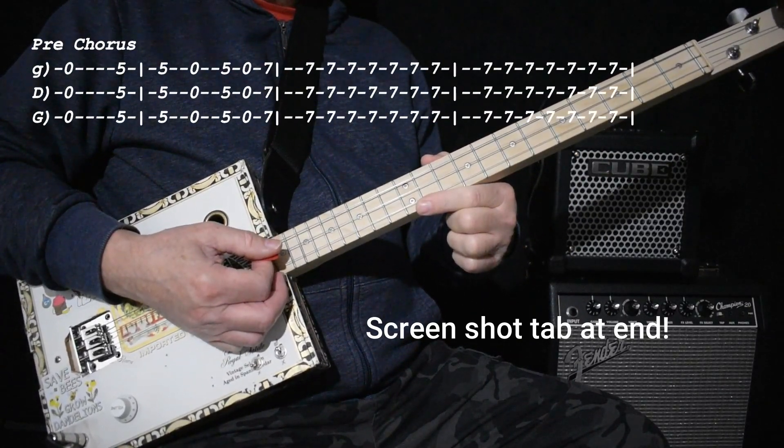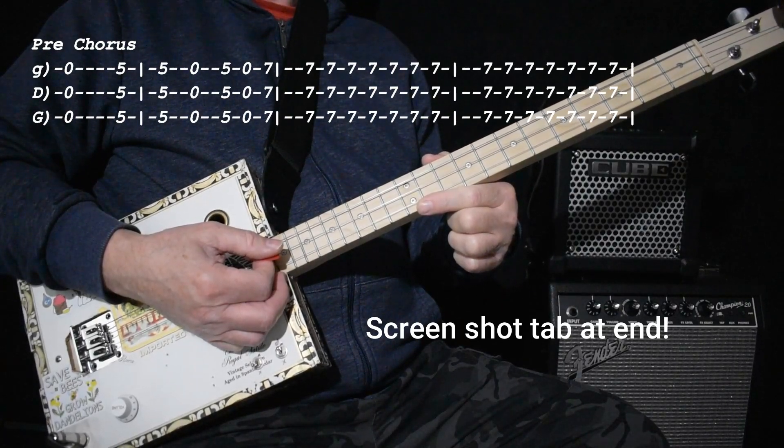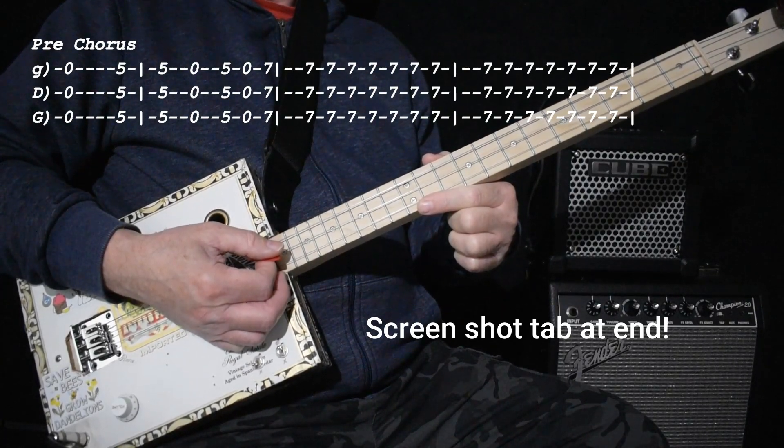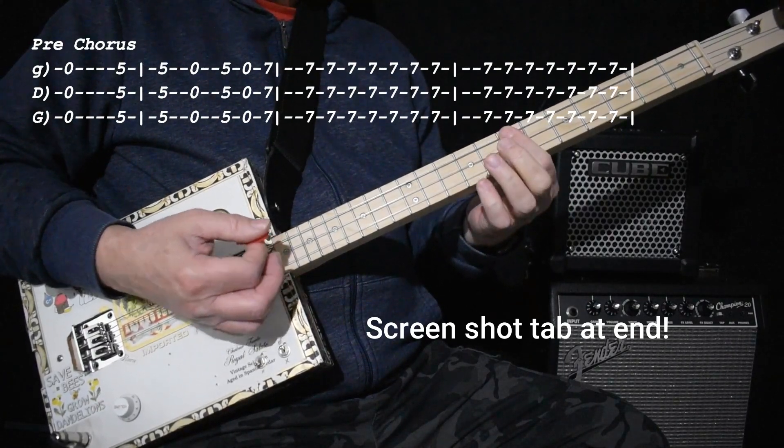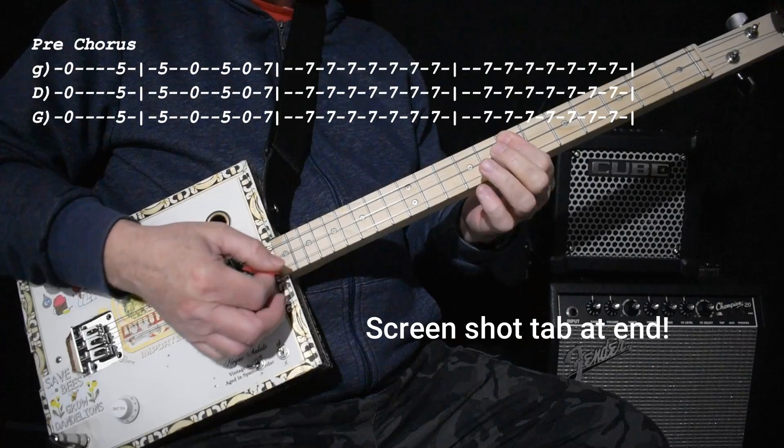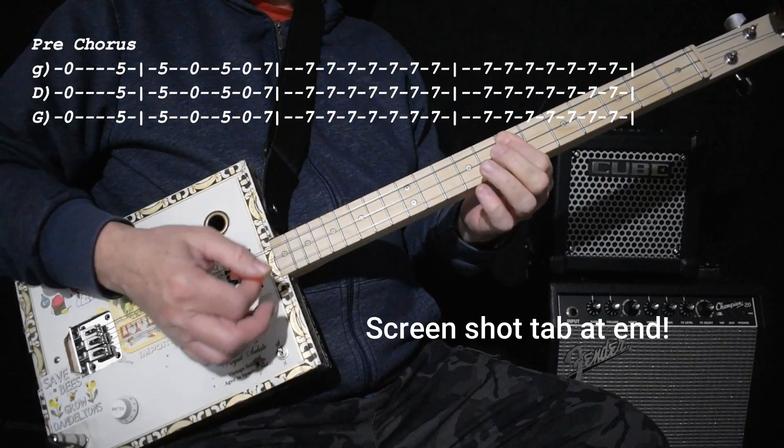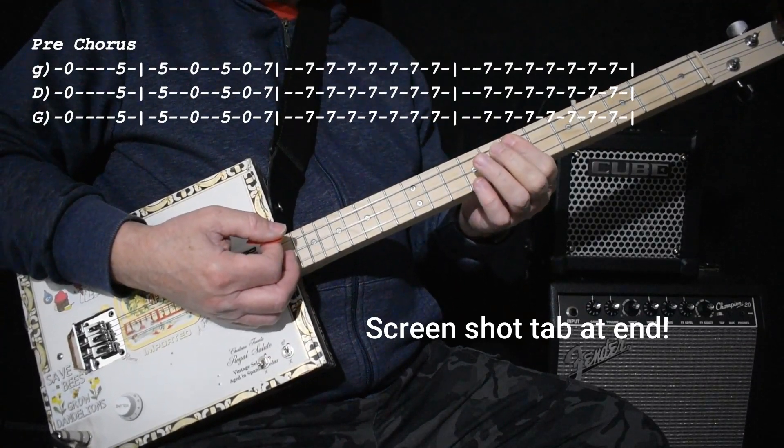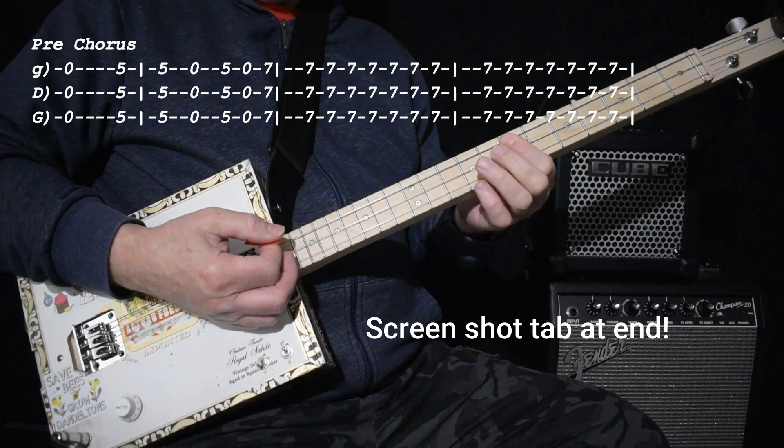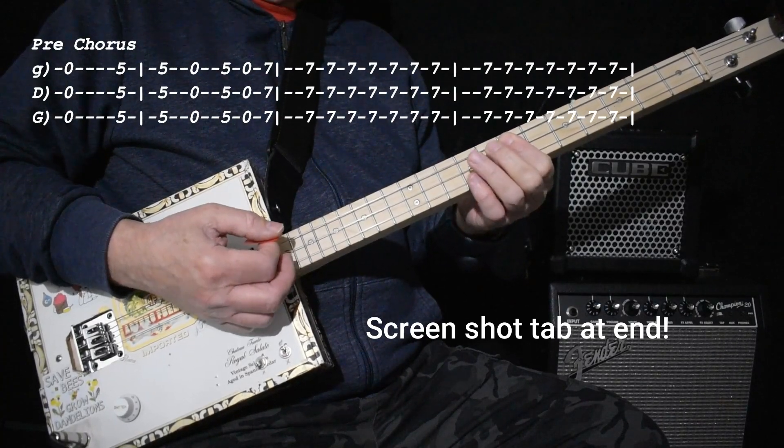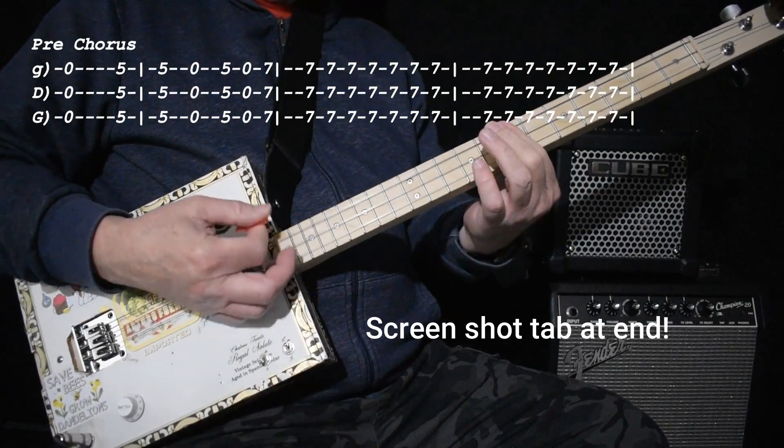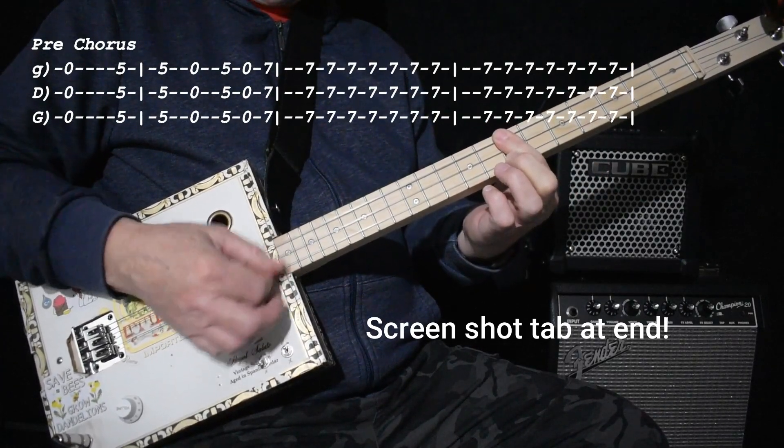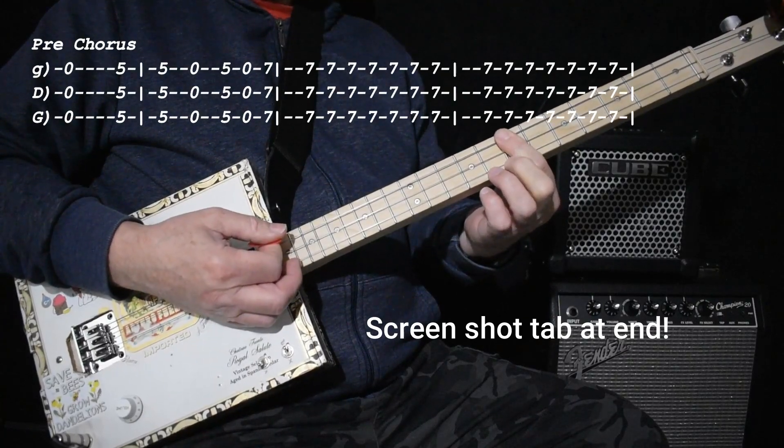And what makes the pre-chorus different is not much. It does exactly the same thing, but when you get to the seven, you keep playing it for two measures, which would be counted like one and two and three and four and, one and two and three and four and, one and two and three and four. I'll do that for you. [demonstrates] It's that simple.